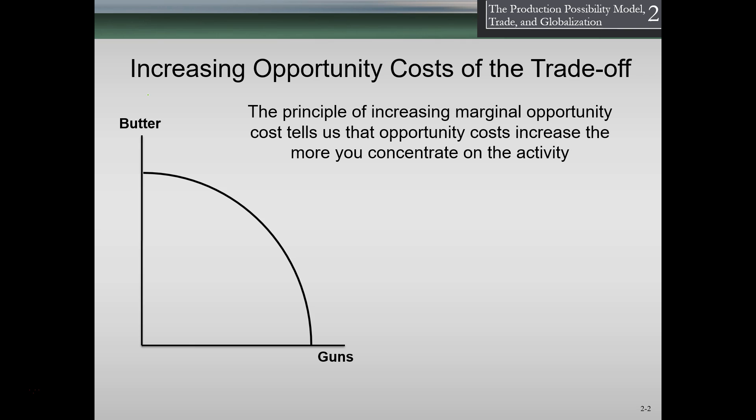So you remember last time that we had a production possibility curve that we saw in table form and we put it in production possibility curve form, and that curve was actually a straight line, not really a curve. So we had a straight line that indicated how much we could study between two different fields and see what the outcome would be. Now we're going to take a look at a similar idea here but we're going to change things up a bit.